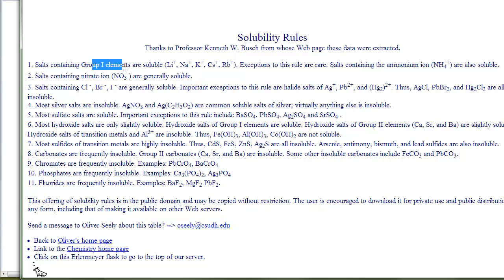Salts containing the group 1 elements are soluble. There are some exceptions to the rules, then those exceptions are mentioned. Salts containing the nitrate ion are soluble. Salts containing chloride ion, bromide ion, and iodide ion are generally soluble, but there are some exceptions. If the salt contains the chloride ion and the silver plus 1 ion, since it's an exception to being soluble, that means it's going to be insoluble. As you get toward the bottom of the solubility rules table, you'll find ions that are generally insoluble. And again, if there are any exceptions, they're listed there.